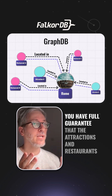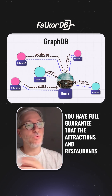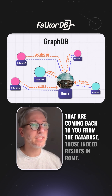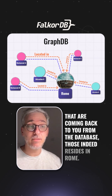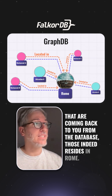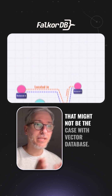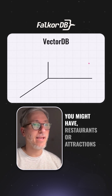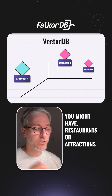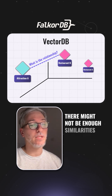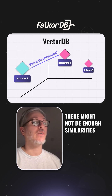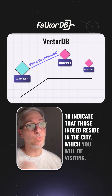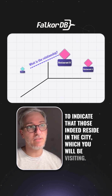When that happens, you have full guarantee that the attractions and restaurants coming back to you from the database indeed reside in Rome. That might not be the case with a vector database. You might have restaurants or attractions where there might not be enough similarity to indicate that those indeed reside in the city which you will be visiting.